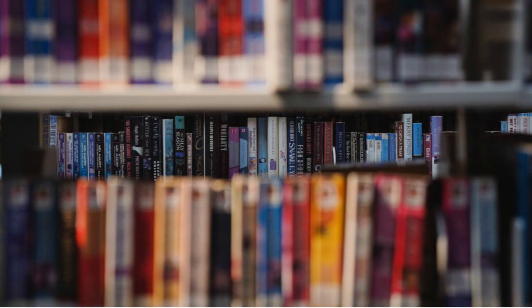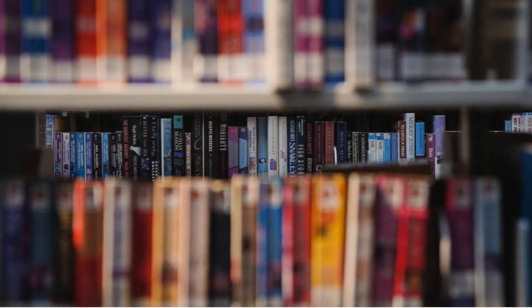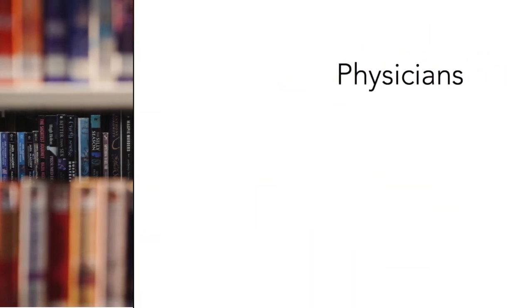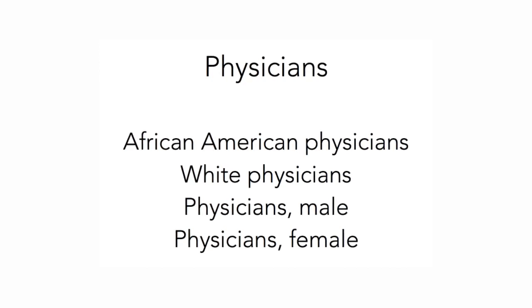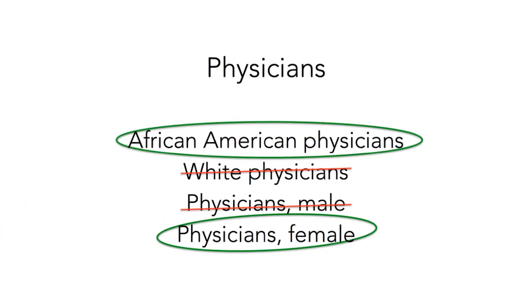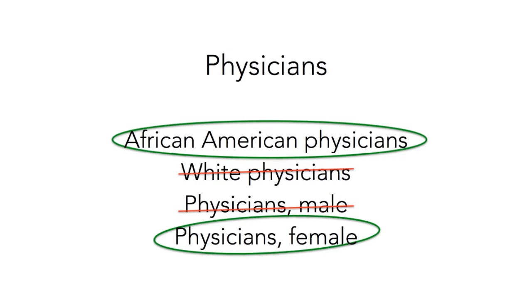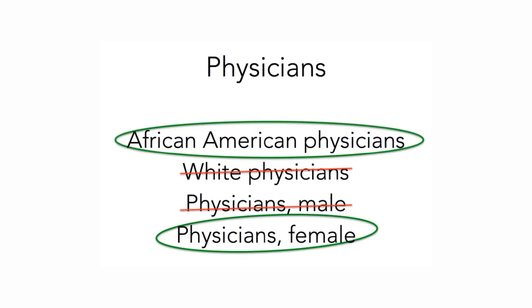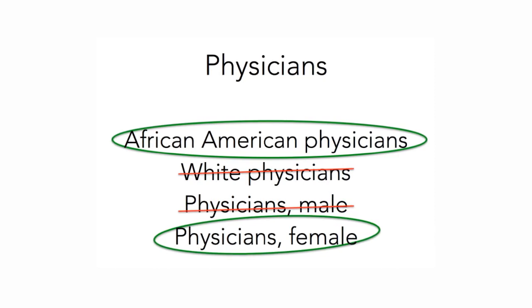But organizational structures, including Library of Congress subject headings, are created by people who reflect the biases of their time and place. The terms used and the ways they relate to each other also change over time, which can complicate the process of accessing information. Consider the subject heading 'Physicians.' Why would there be subject terms for 'African American physicians' and 'physicians female,' but not for 'white physicians' or 'physicians male'? These categories reflect cultural and historical assumptions that the term 'physicians' refers to white men, and that only physicians who differ from that norm need to be identified separately.